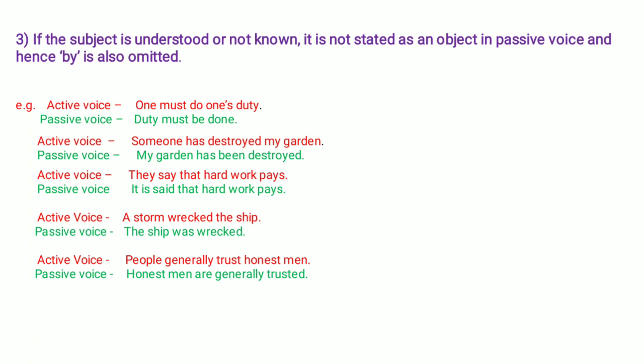For example: 'One must do one's duty.' This is a common statement. 'One' is the subject, 'must' is the modal auxiliary verb, 'do' is the verb, and 'one's duty' is the object. Since 'one' is not a particular person, we take the object directly: 'One's duty must be done.' V3 of 'do' is 'done.' There is no need to add 'by' and the subject — it is omitted.